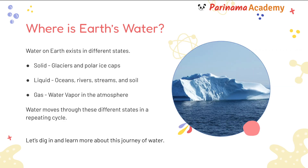Where is earth's water? Water on earth exists in different states. The first state is solid — an example of a solid are glaciers and polar ice caps. The second state is liquid — examples of this are oceans, rivers, streams, and soil. The third state is gas — an example is water vapor in the atmosphere. Water moves through these different states in a repeating cycle. Let's dig in and learn more about this journey of water.